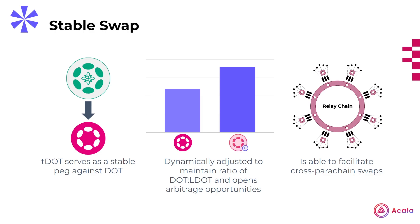The sensitivity to which this occurs is dynamically tweaked by the Tapio protocol, however, it will be subject to community governance down the road. This robustness can then be taken advantage of by being able to facilitate cross-parachain swaps, thanks to XCM and the inherent cross-chain nature of TDOT.